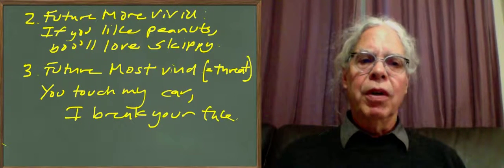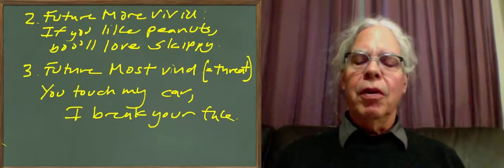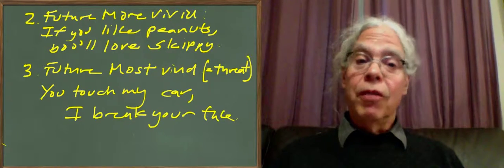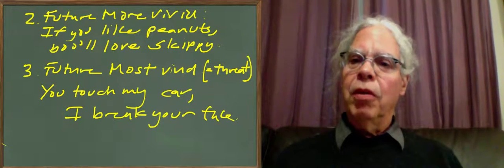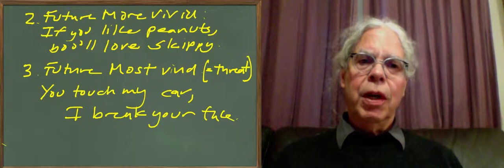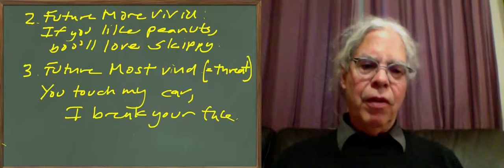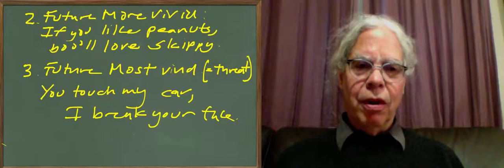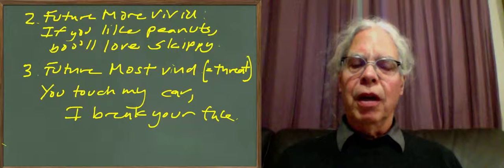There are two other types: the future more vivid and the future most vivid. Future more vivid is of the type of the Skippy peanut commercial: if you like peanuts, you'll love Skippy. There's an element of futurity in it. Again, it's making an inference from a supposition, and it has the kind of the cachet of being something that's really true. But again, it's a hypothesis and an inference, and it's different from the others that we've been looking at.